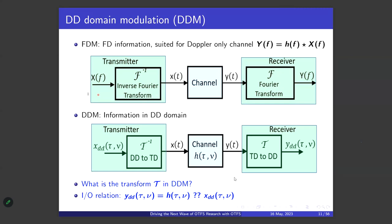DD domain modulation is inspired by this framework. Throughout the talk, many concepts are motivated by going back to TDM or FDM. In DD domain modulation our information resides in the delay-Doppler domain; a transform converts it to a time-domain signal, and at the receiver the inverse transform brings it back to the DD domain.